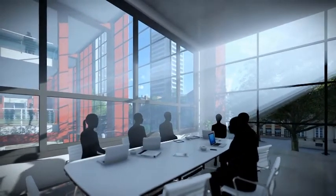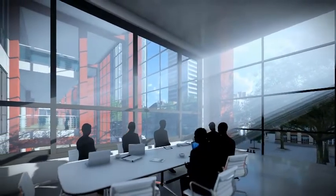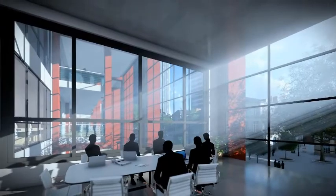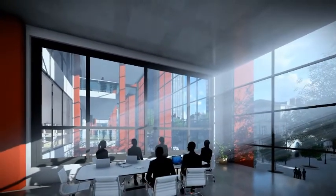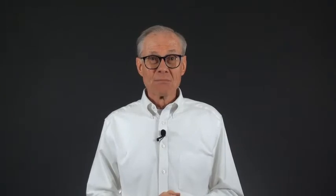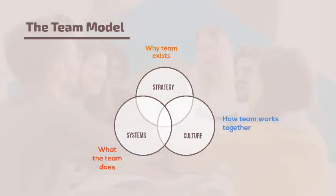The three elements of a team apply anytime you have a group of people who are interdependent and share a common mission. Note that when I talk about these elements, I'm not talking about vision and goals for the whole company, but rather for the entity as a team. I could have used other words — strategy, systems, and culture, or vision, organization, and climate — but for our purposes I'll stick with charter, design, and relationships.